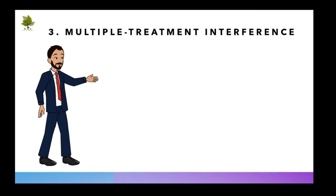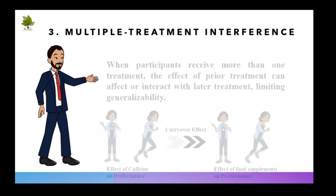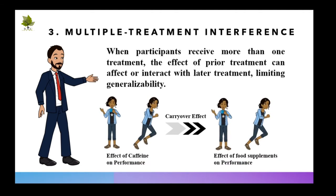Multiple treatment interference occurs when participants receive more than one treatment. The effect of the prior treatment can affect or interact with later treatment, limiting generalizability.